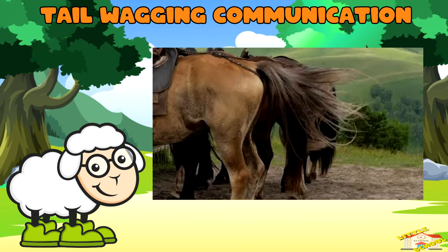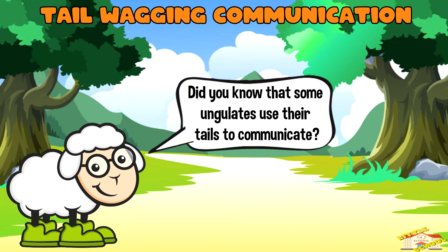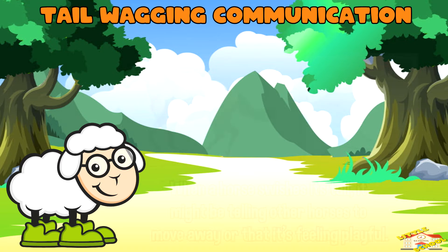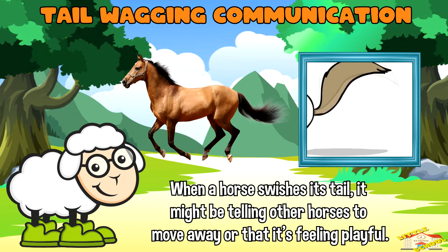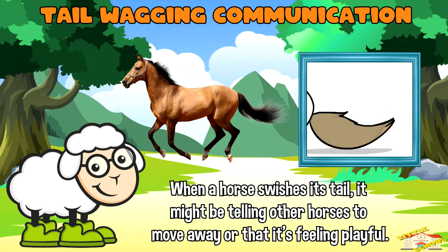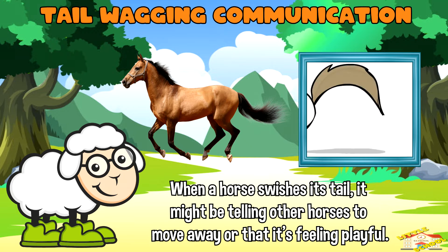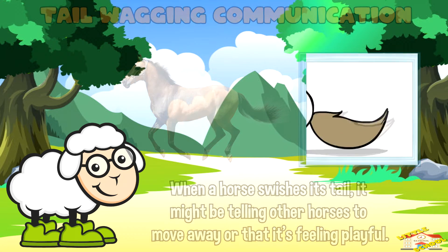Tail wagging communication: did you know that some ungulates use their tails to communicate? For example, when a horse swishes its tail, it might be telling other horses to move away or that it's feeling playful.